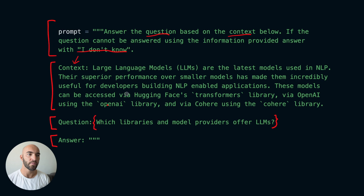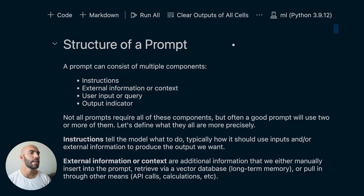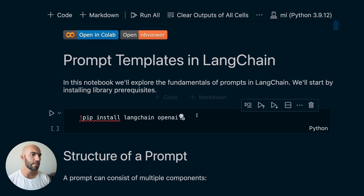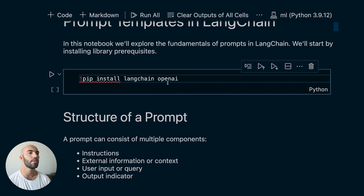Let's go to our code. There are a few things we need to install: pip install LangChain and OpenAI. You can also use other frameworks — it doesn't have to be OpenAI. You can use Cohere or Hugging Face; it's completely up to you. But for what we're doing here, the OpenAI model is very good.